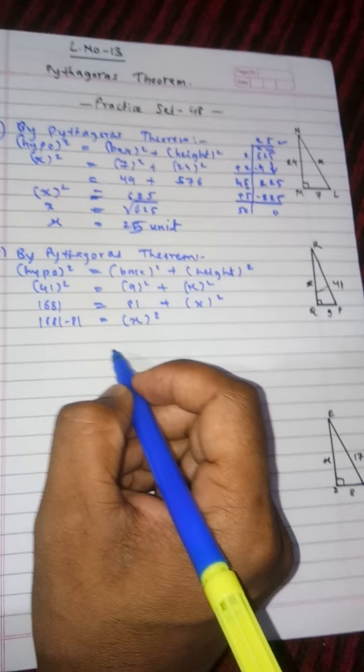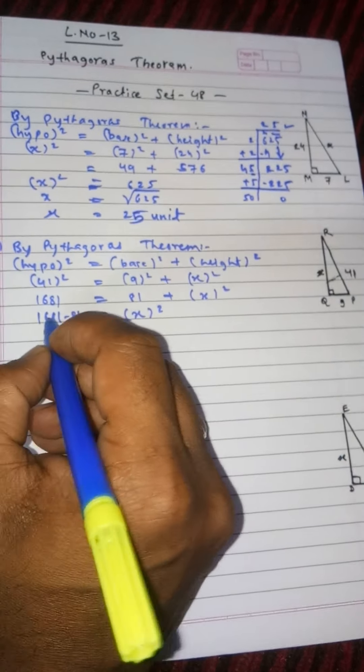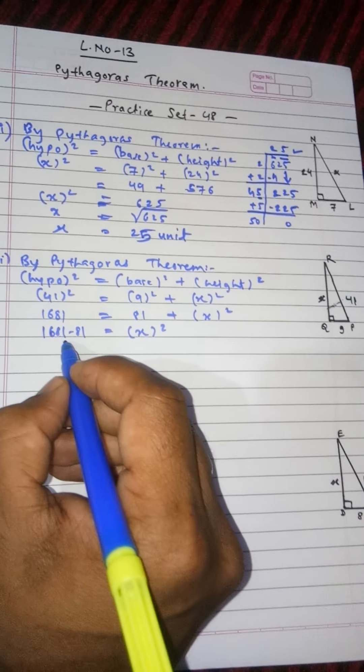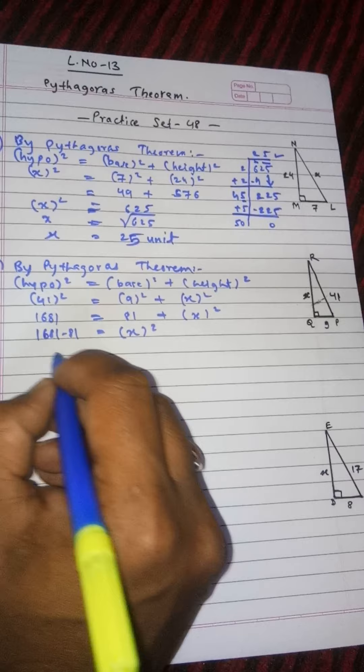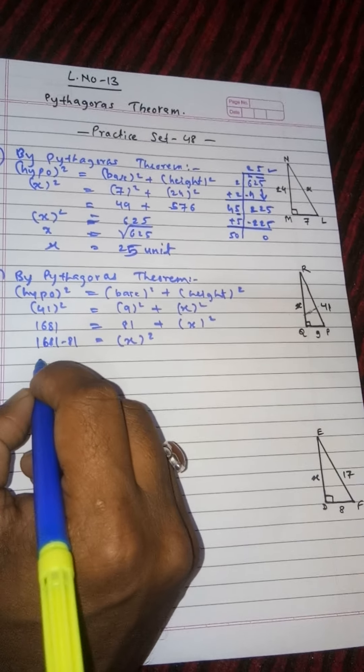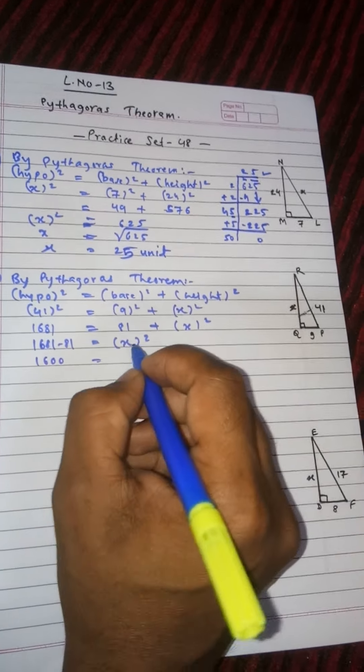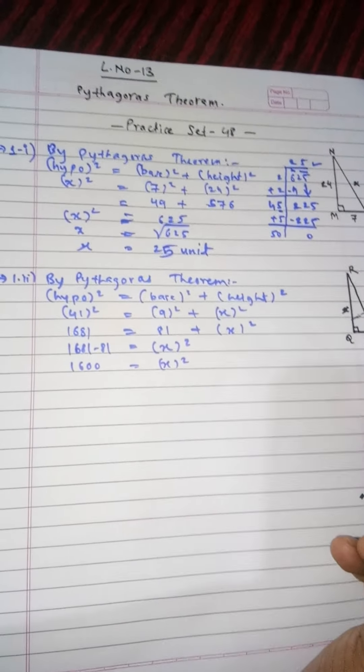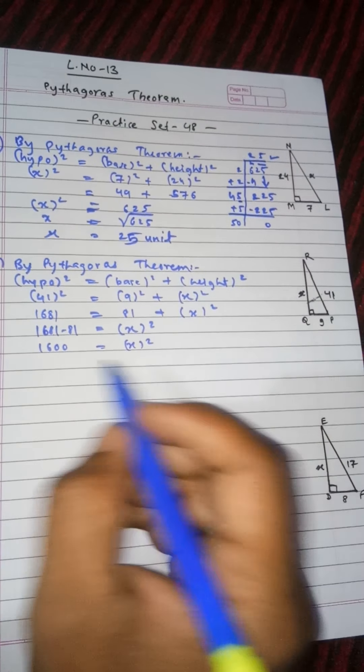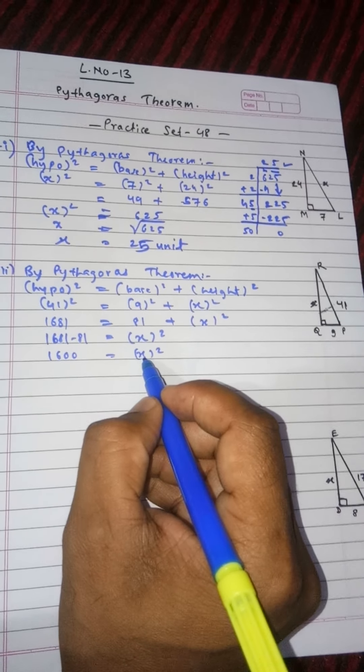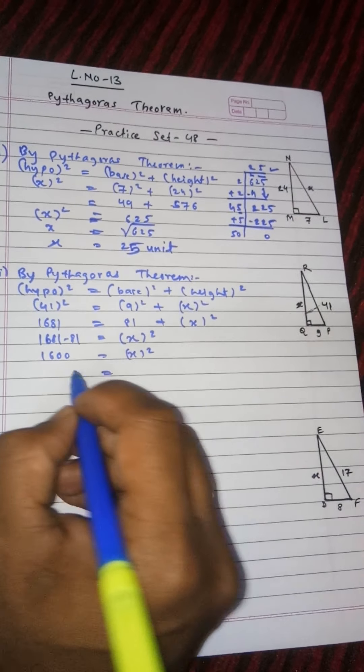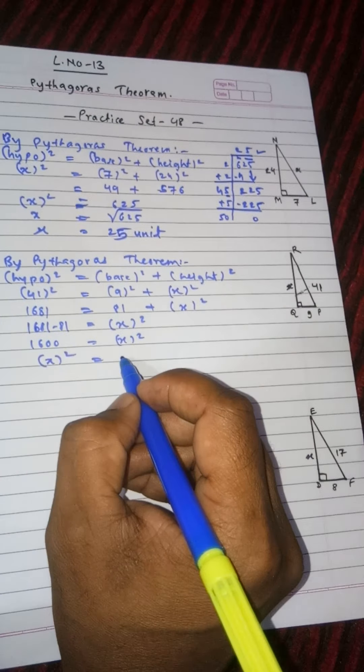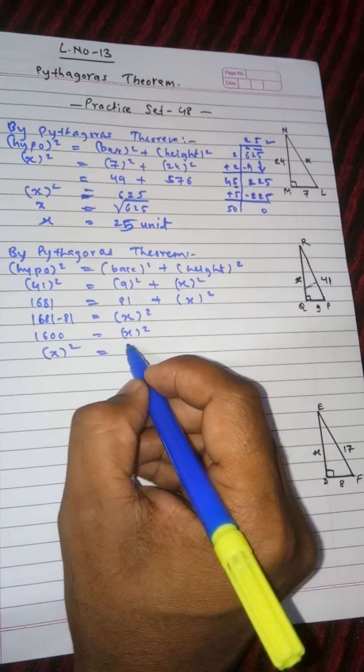Very easy step, many times we have solved this kind of example. Now 1681 minus 81, so 81 don't go on. 1600 is equals to x squared. For your convenience we will write like this: x squared is equals to 1600.